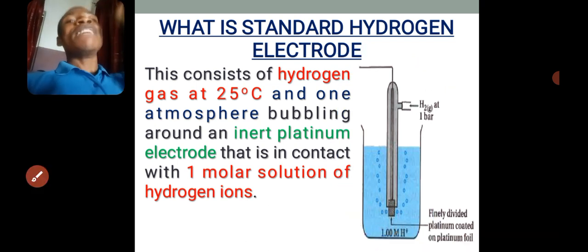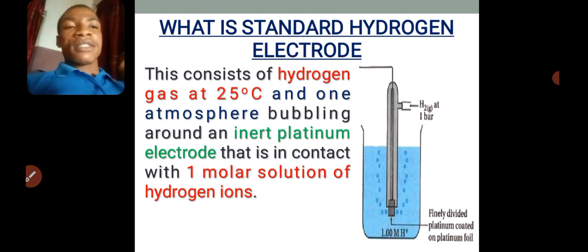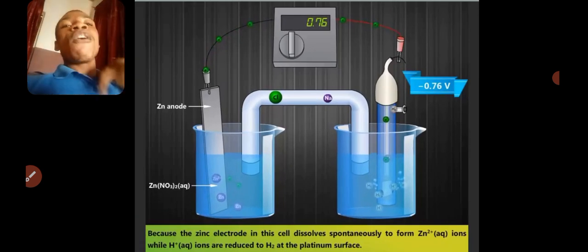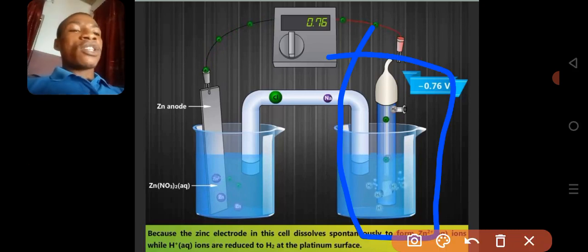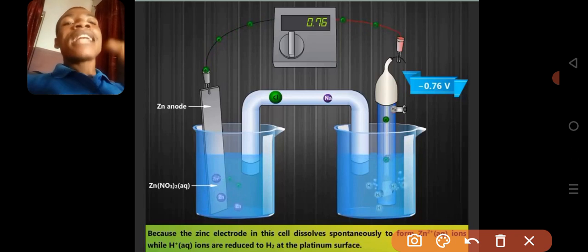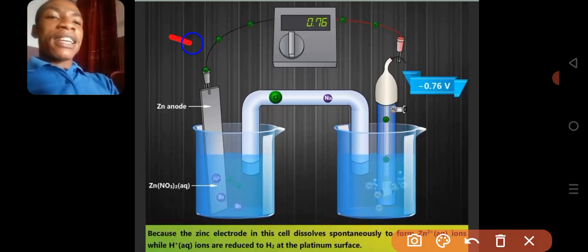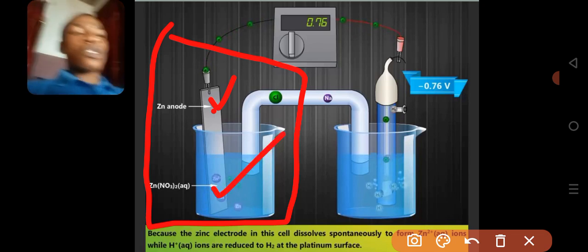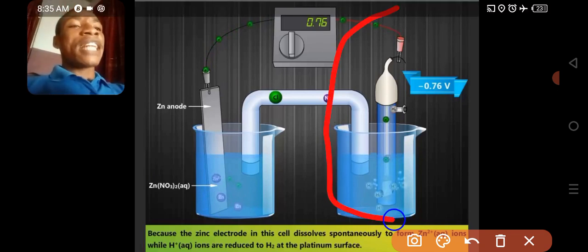This electrode has been deliberately assigned a potential difference of zero volts. So how do you measure the electrode potential of another element using the standard hydrogen electrode? What you do is connect your half cell — in this case, zinc metal inside a zinc sulfate solution — to a standard hydrogen electrode. Can you see the standard hydrogen electrode, where hydrogen gas is in contact with a one molar solution of its own ions through a platinum wire?